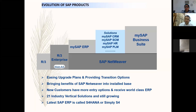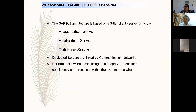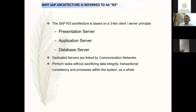Why is SAP architecture referred to as R3? Because the technical architecture is comprised of three levels of servers: a presentation server, an application server, and database servers. The database server stores your data. The application server runs the complete business logic and code. The presentation layer is what you see on your laptop or phone. That is why it is called three-tier architecture and referred to as R3.